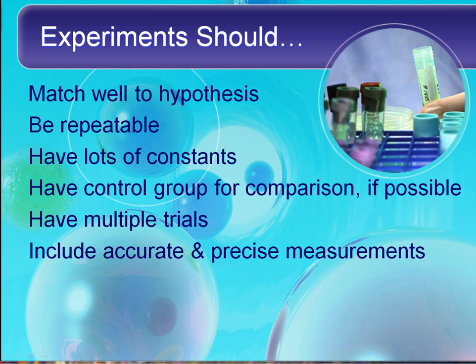Experiments should always match the hypothesis. If your hypothesis is talking about Miracle-Gro, you don't use any other fertilizers. But if your hypothesis is about fertilizer in general, you should probably use a number of different fertilizers — though that wouldn't be a great experiment because there are too many variables. So you need to make your hypothesis precise and make sure your experiment matches it. Your experiment must be repeatable, have lots of constants, have a control group for comparison if possible, and have multiple trials so you know there wasn't just something unusual about one plant.